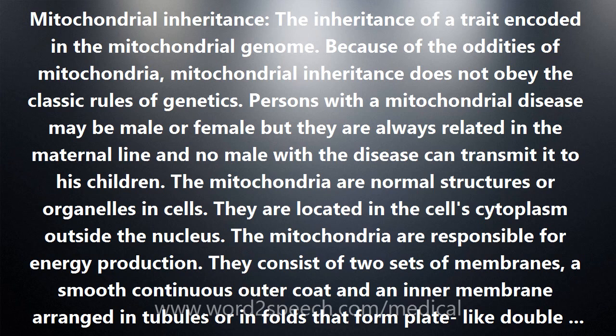Each mitochondrion has a chromosome made of DNA — mitochondrial DNA or mtDNA — but it is otherwise quite different from the better-known chromosomes in the nucleus. The mitochondrial chromosome is much smaller and round, whereas the chromosomes in the nucleus are shaped like rods. There are many copies of the mitochondrial chromosome in every cell, whereas there is normally only one set of chromosomes in the nucleus. Mitochondrial DNA contains 37 genes, which are all essential for normal mitochondrial function. Many genetic conditions are related to changes in particular mitochondrial genes.